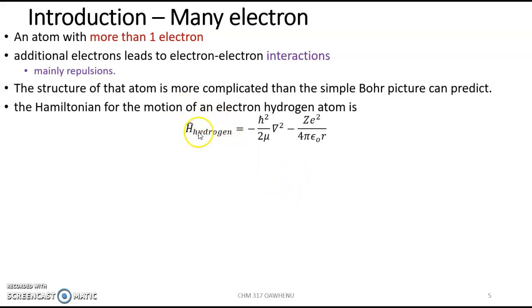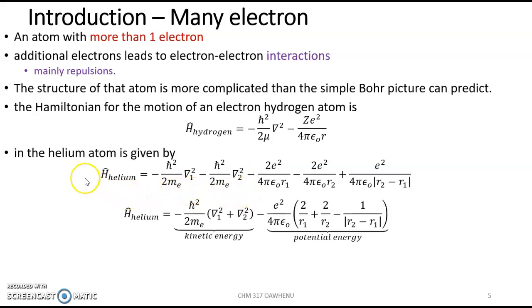If we recall, the Hamiltonian for the hydrogen atom is a simple expression. And the potential energy, that's the part that makes it simple, depends only on the distance of one particle from another particle. For a helium atom, it gets more complicated.